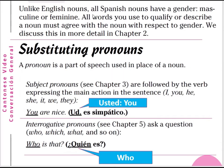Unlike English nouns, all Spanish nouns have a gender — either masculine or feminine. All words you use to qualify or describe a noun must agree with the noun with respect to its gender. We will discuss this in more detail in chapter 2. Sometimes we use a pronoun instead of a noun — a pronoun is a part of speech used in place of a noun.